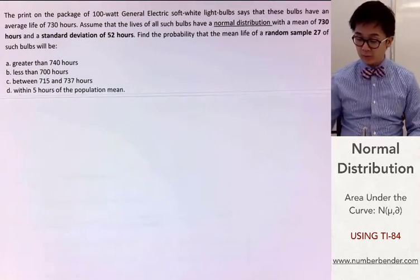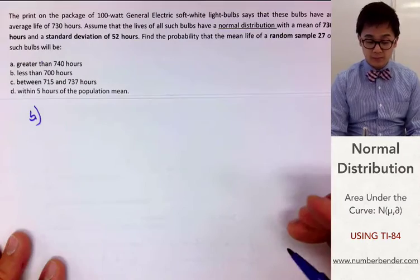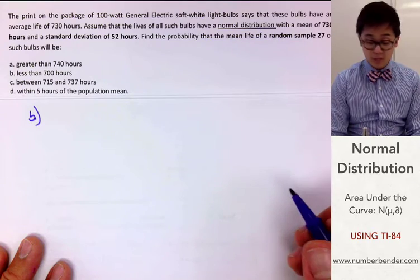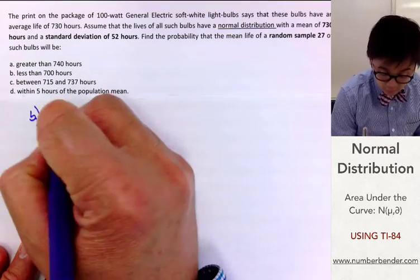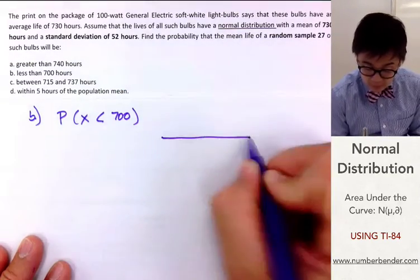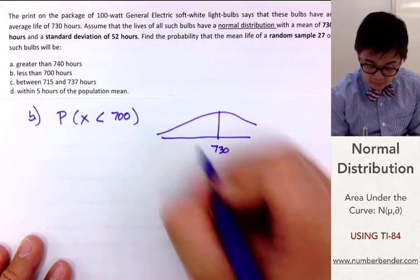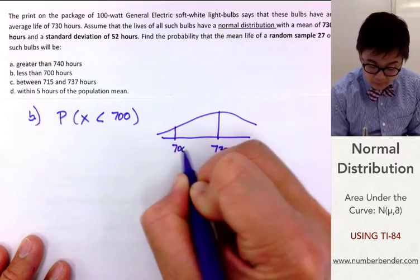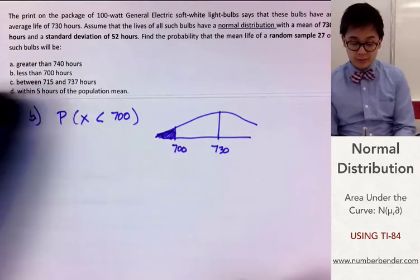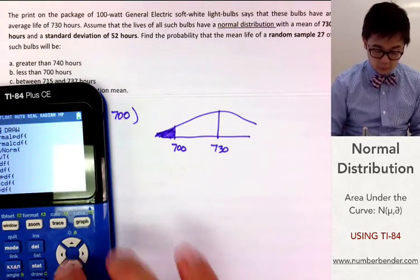Now let's answer problem letter B. It uses the same information, but this time we're computing the probability that the average lifespan of the light bulbs will be less than 700 hours — that is, P(X̄ < 700). On the standard normal curve, the mean is 730 and 700 is somewhere to the left. We need to find that left-tail region.